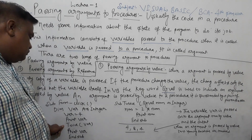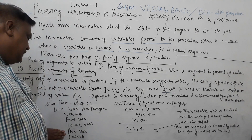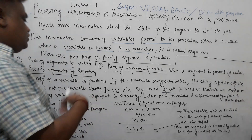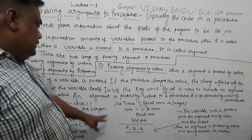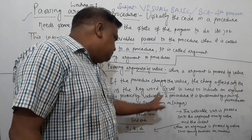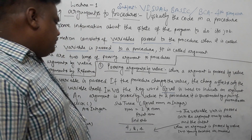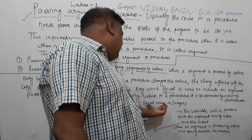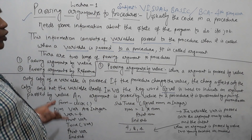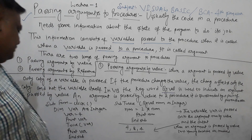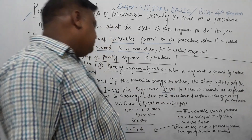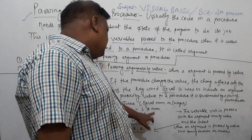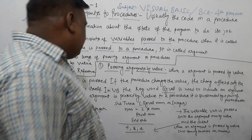Let's look at the code example. We have a variable called num declared as an integer using ByVal. The procedure takes num as integer by value. Inside the procedure, we say num is equal to 2 into num, which doubles the value. So if num starts as 4, inside the procedure it becomes 8.